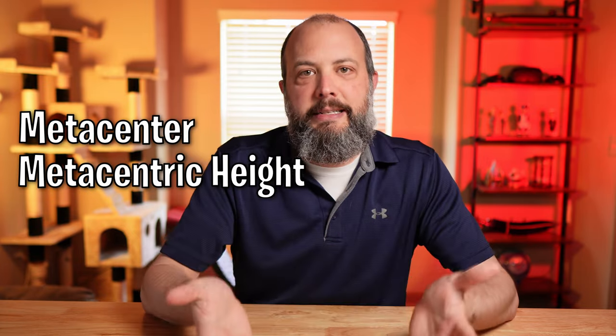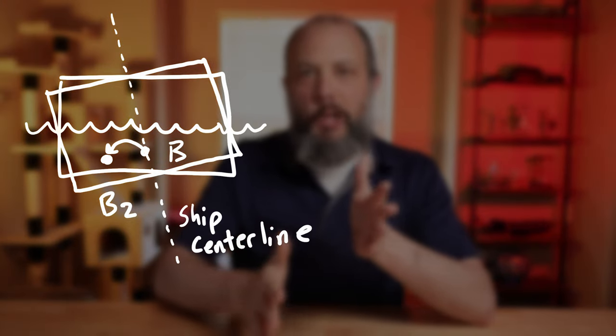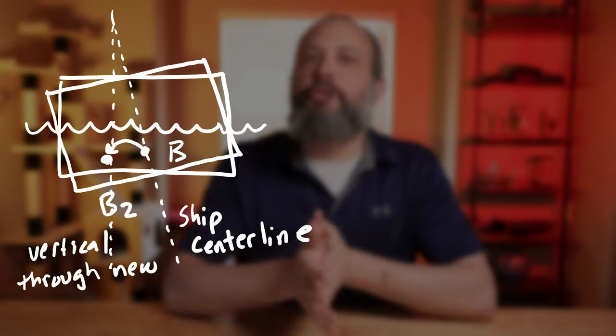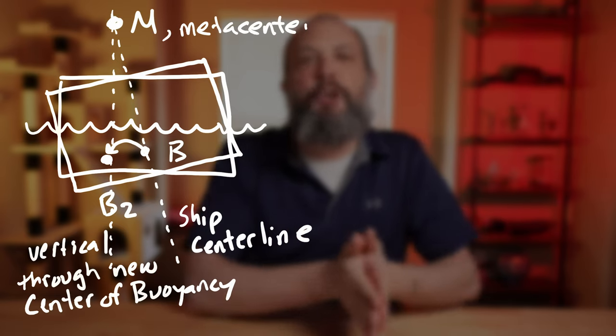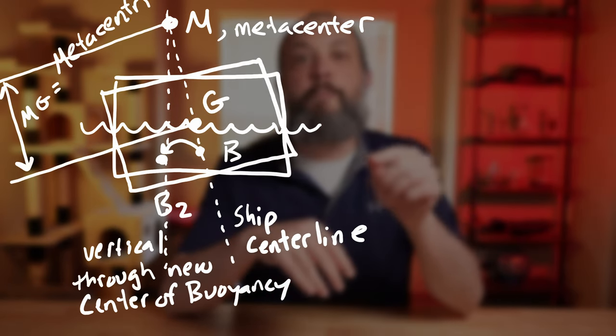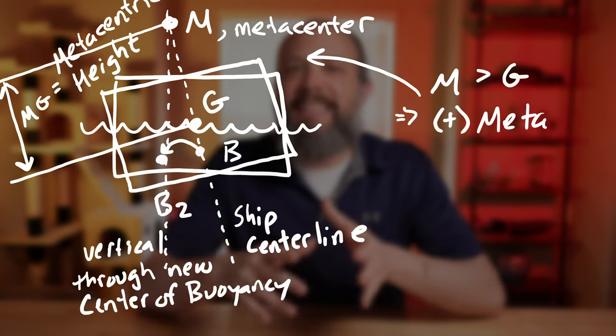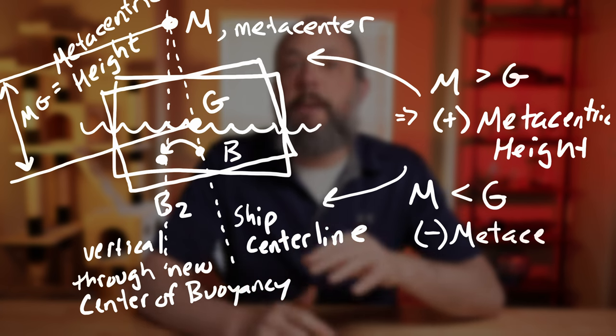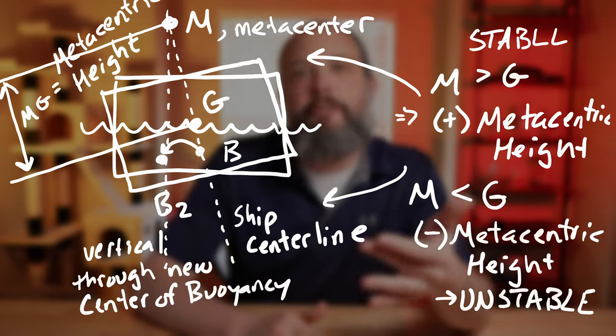That's where the new term comes in: metacenter, or metacentric height. The metacenter is going to be located along the center line of your object, directly above the new center of buoyancy. Metacentric height is the height of the metacenter above the center of gravity. For stability, you need this metacentric height to be positive, which means you need the metacenter to be above the center of gravity. For very wide objects, as they start to tip over, the center of buoyancy moves a lot out to one side, which gives a very high metacenter and therefore a very positive metacentric height.